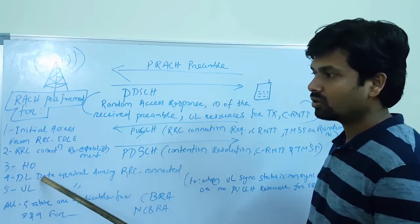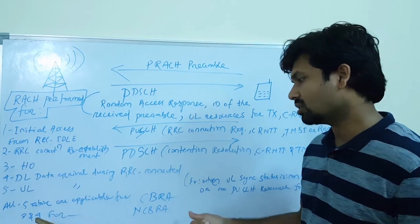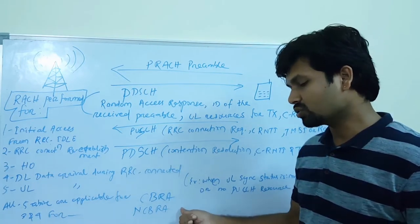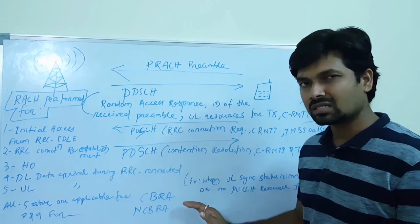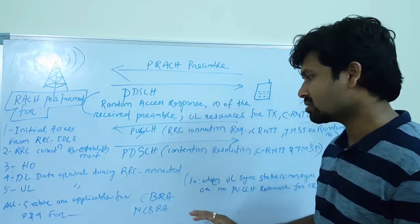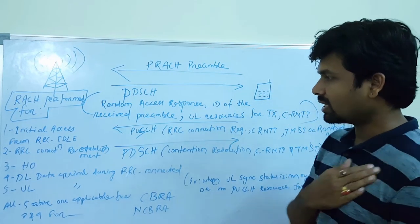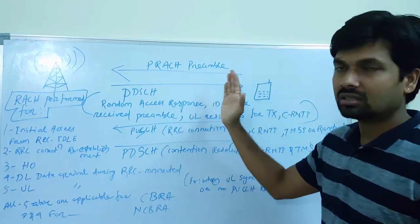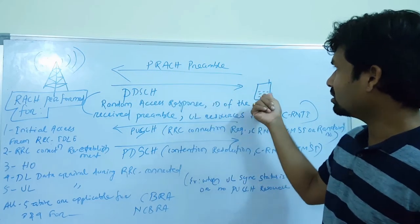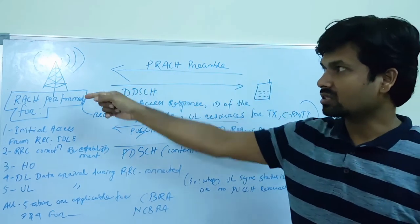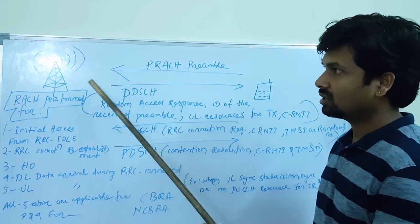Contention-based random access is applicable for all five reasons. However, for non-contention-based random access, in the case of downlink data arrival during RRC connected state or handover — reasons three and four — we use non-contention-based random access.